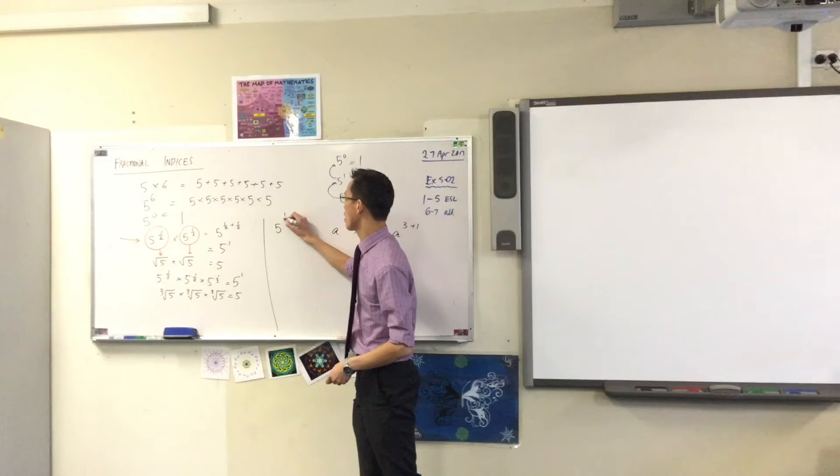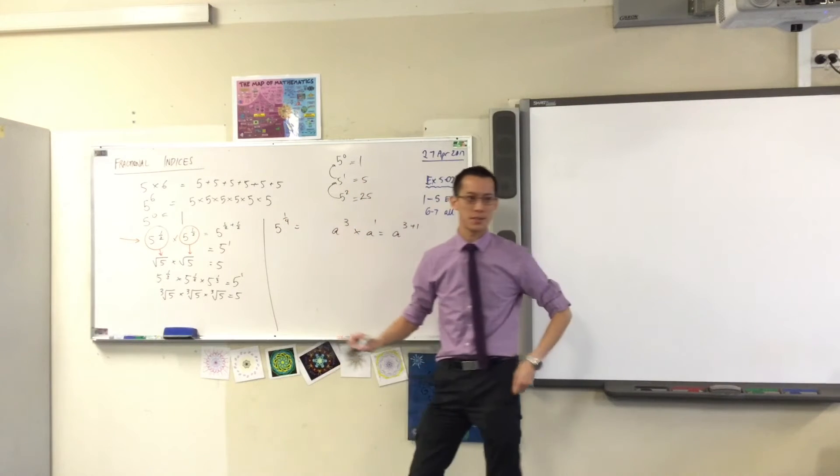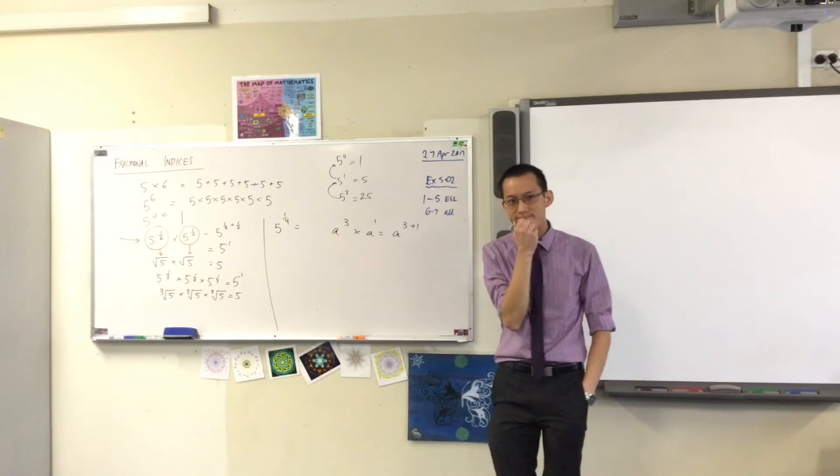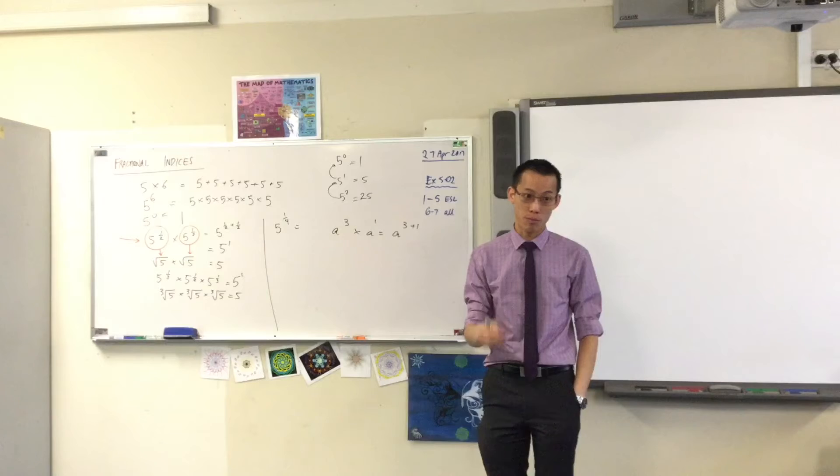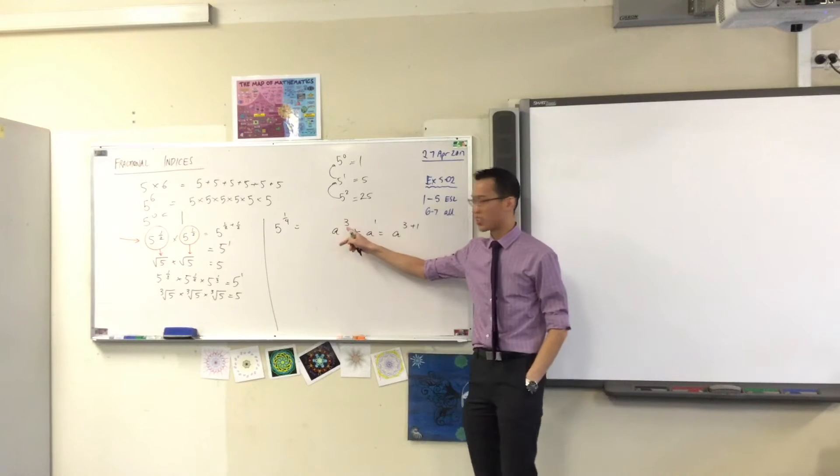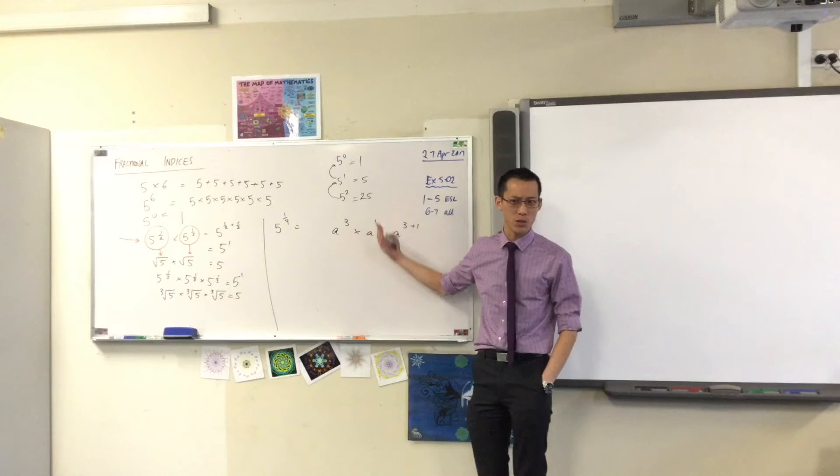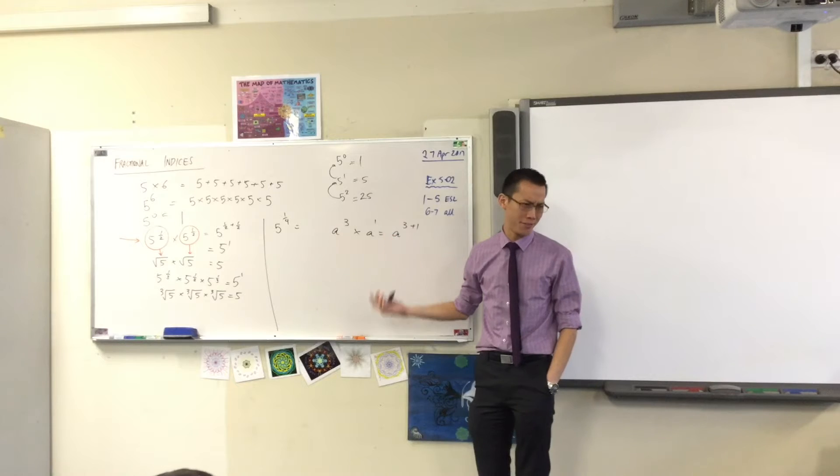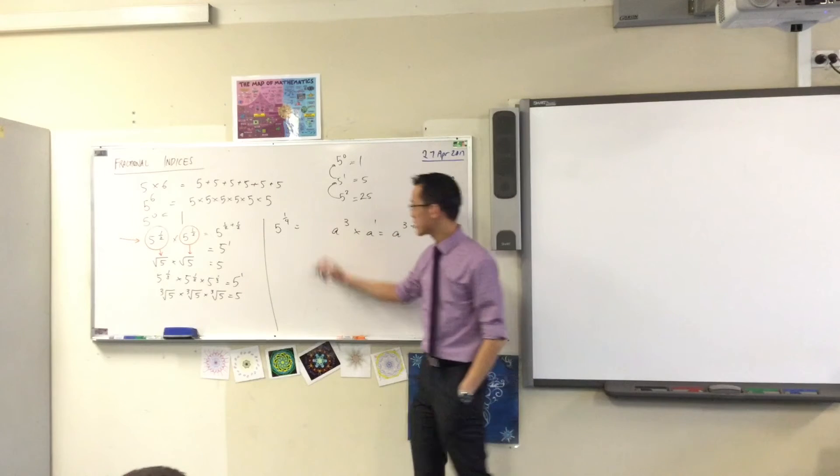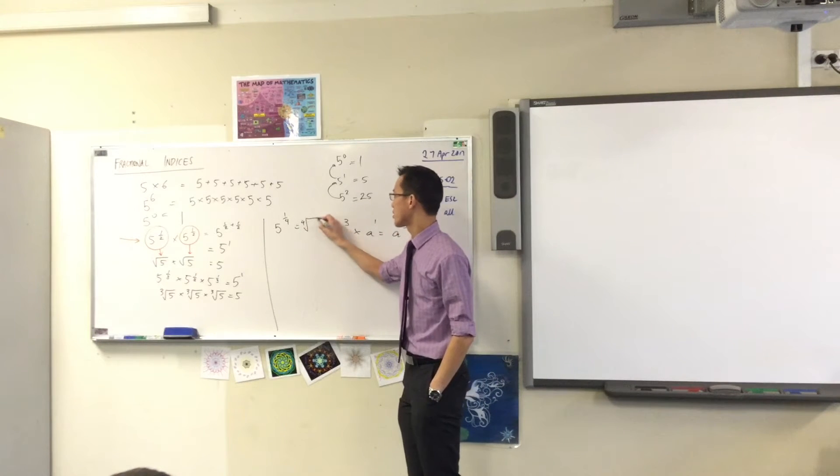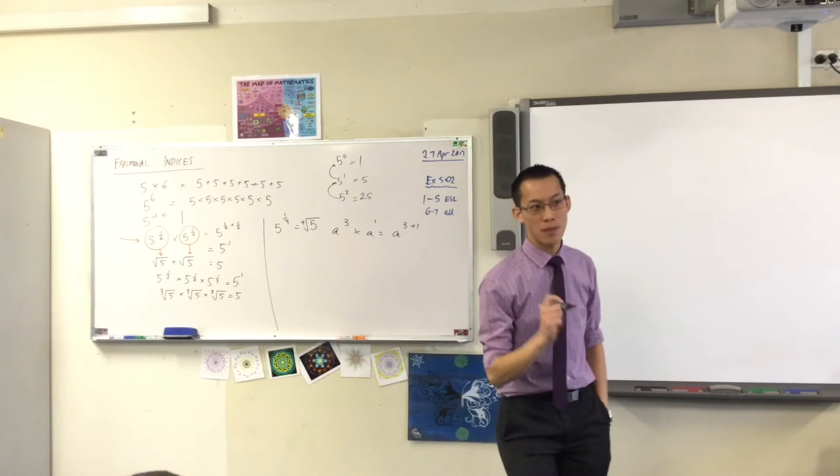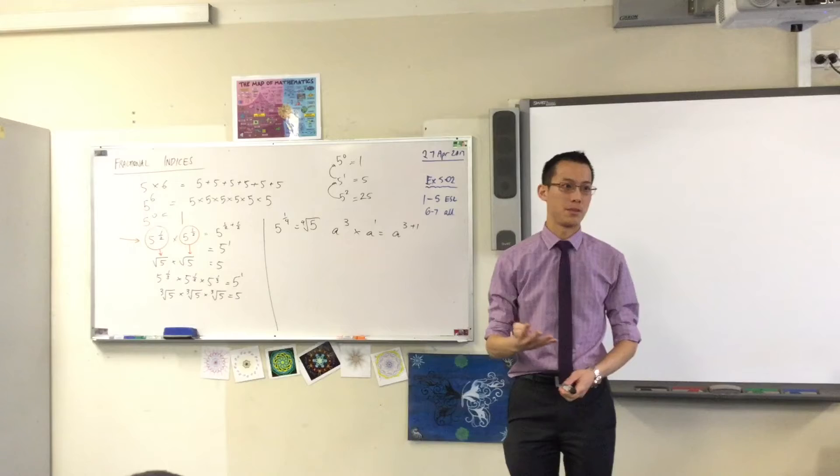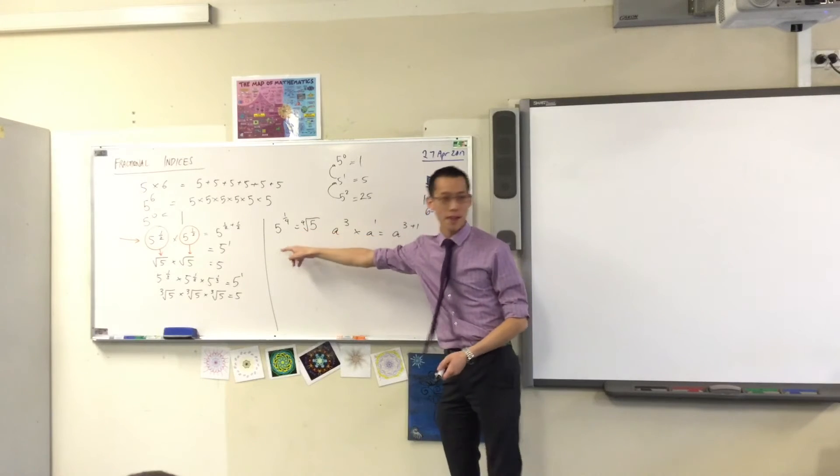What would you guess 5 to the power of a quarter is? Now, it doesn't have a nice name like square root or cube root, just like this is cubed and this is squared, but when the power is 4 you just say to the power of 4. So, we would call this the fourth root of 5. It's the number where if you multiply it by itself four times, you'll get 5.